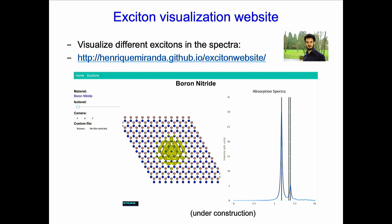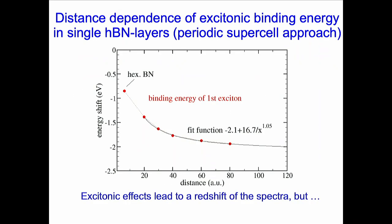Some time ago, with Enric, we started an Exciton website. In the age of high-throughput computing, we put calculations for boron nitride on it: you click on different peaks in the spectrum, get the exciton wave function, rotate it with your mouse, zoom in, and change the ISO levels. It's still functional at its address, and will eventually evolve further.